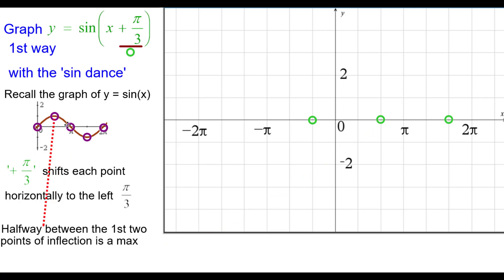And halfway between the first two points of inflection is a maximum point. So right above the halfway point there will be a maximum point which will be at pi over 6 comma 1.